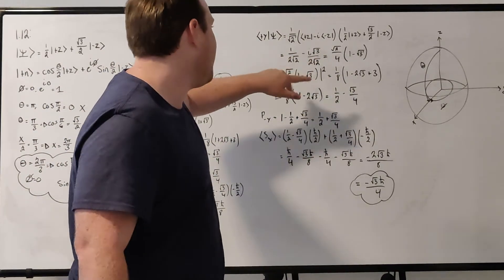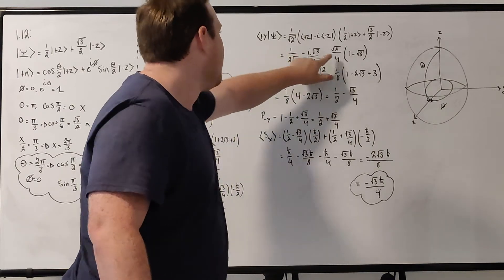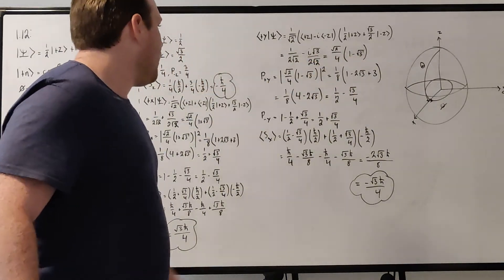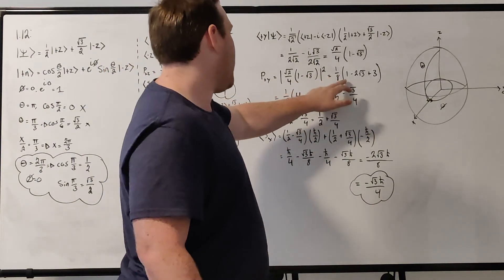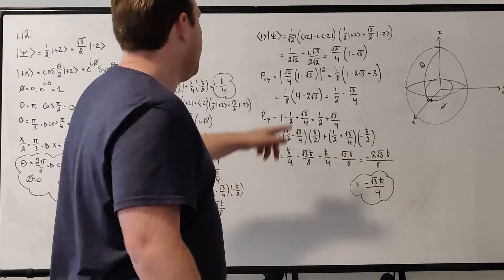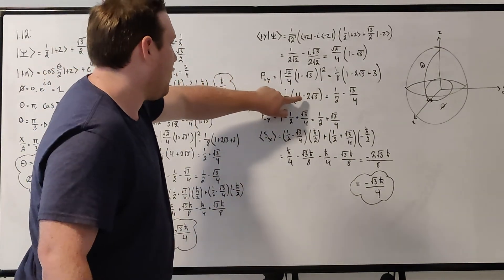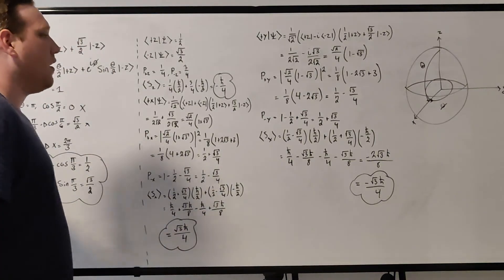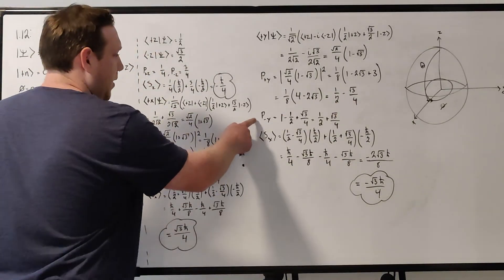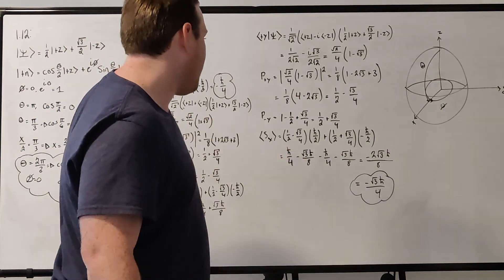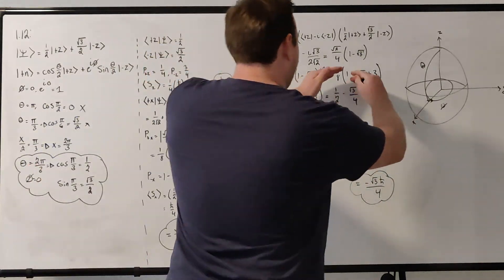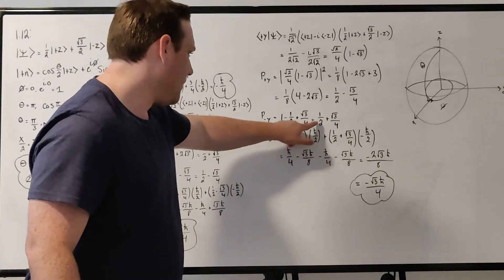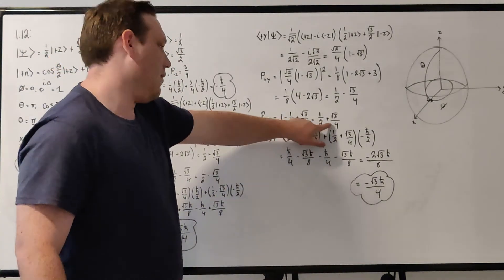Factor that out. Again, 1 over 2 root 2 is the same as root 2 over 4. So we factor it out. We have 1 minus i root 3 in the parentheses. Take the magnitude squared. We get the magnitude squared of root 2 over 4 times 1 minus i root 3, which is 1 eighth times 1 plus 3, when you do the foiling here. So then we get 1 eighth times 4, which if you multiply through, you get 1 half minus root 3 over 4. So that's our probability for plus y. Now for minus y, just subtract it from 1. So 1 minus 1 half plus root 3 over 4, because you distribute the minus sign. So it's like 1 minus this in parentheses. So the second minus becomes a plus. And then you get 1 half plus root 3 over 4 for the probability for minus y.